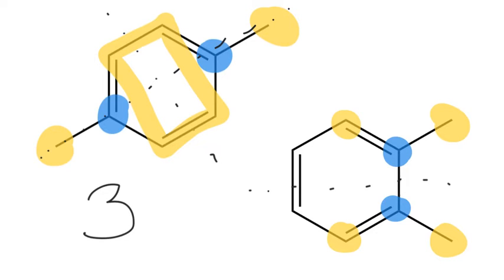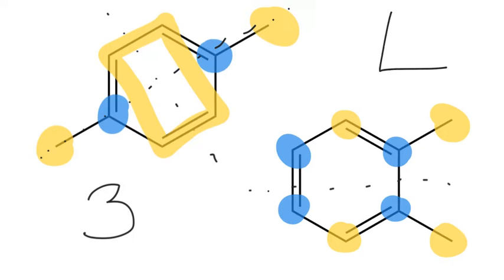Finally, we'd expect to see a fourth peak for these two carbons — equivalent to each other but different from all the others, because of that line of symmetry and the lack of another line of symmetry. So in total for this particular molecule, we can expect to see four carbon-13 NMR spectra peaks.